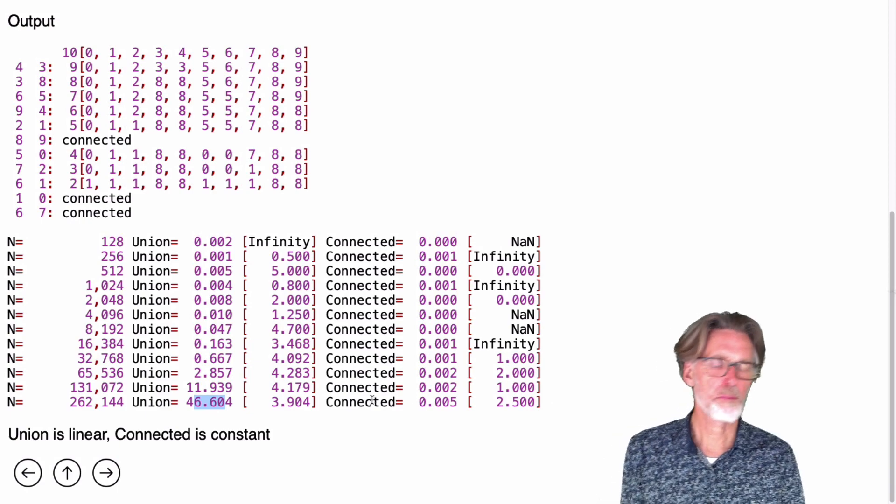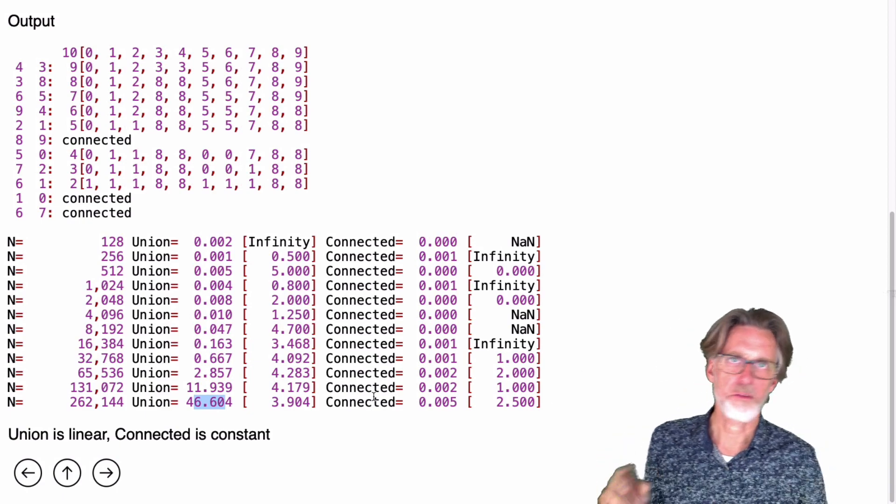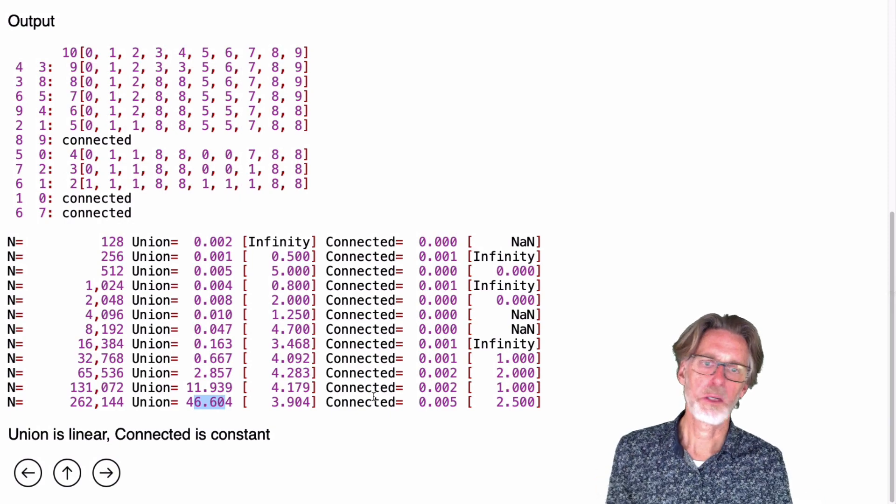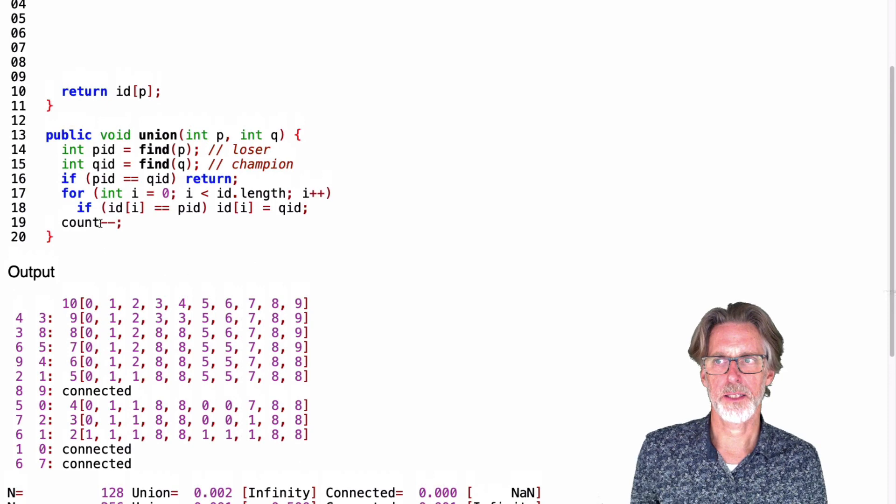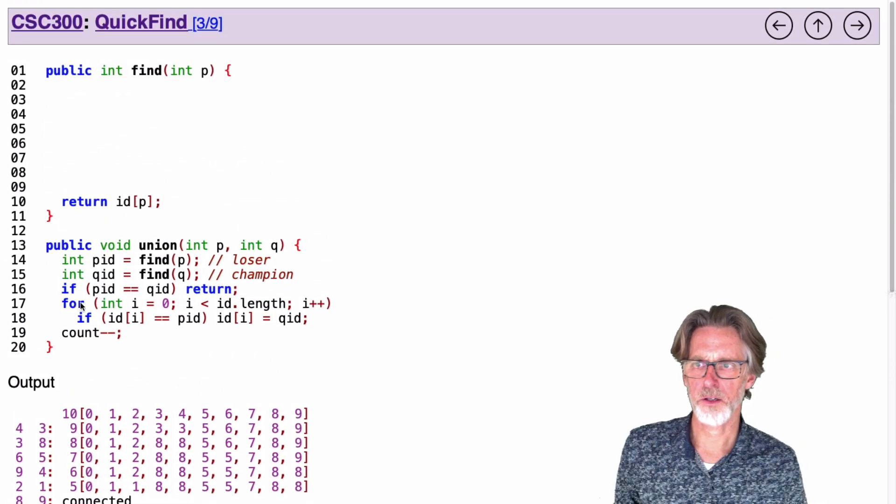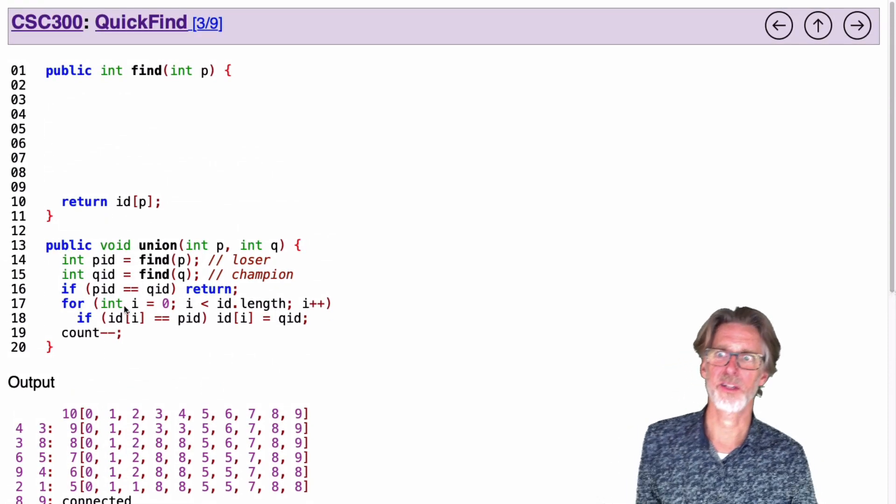The connected algorithm is super fast, just an array lookup or a couple of them, no problems. But union's just too slow, and the reason is this loop. We've got this loop here, and we just need to get rid of it.